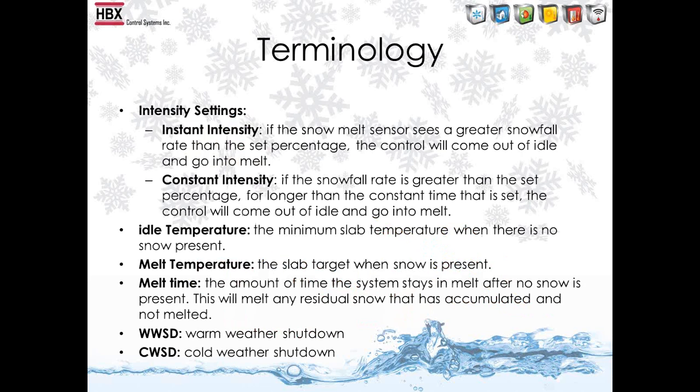Here are some of the terminology we use when talking about the HBX snowmelt systems. We have two different intensity settings. Instant intensity is when the snowmelt sensor sees a greater snowfall rate than the set percentage — the control will come out of idle and go into melt. For example, if you have a client that doesn't want to see any snow on their driveway, you can set the control to approximately 5 or 10%. If you have a client that doesn't mind having an inch or two on the driveway, you can set the control to 30 or 40%.